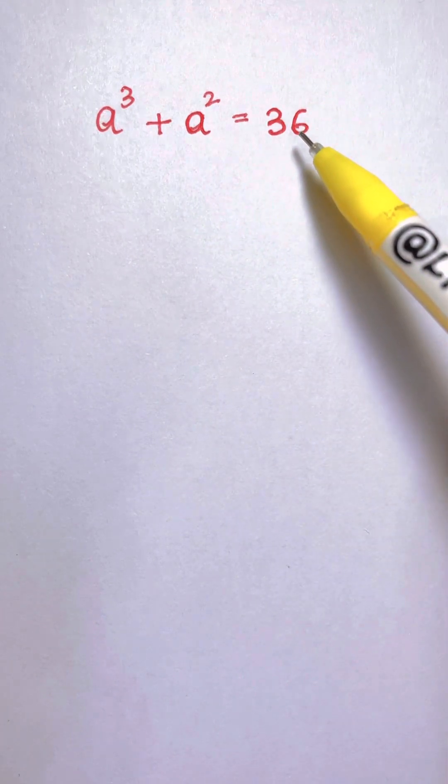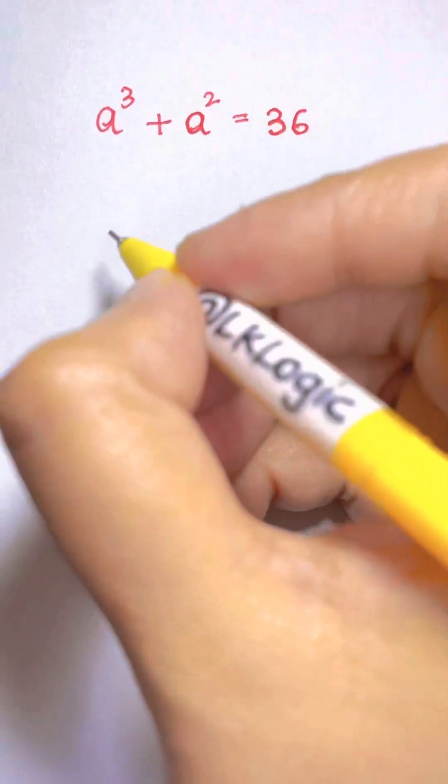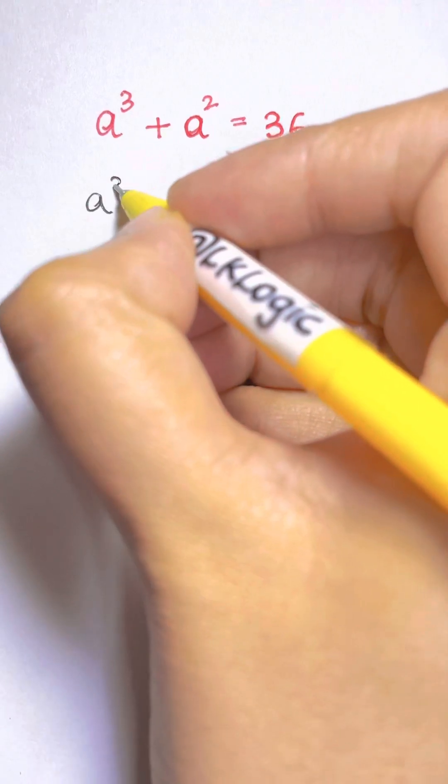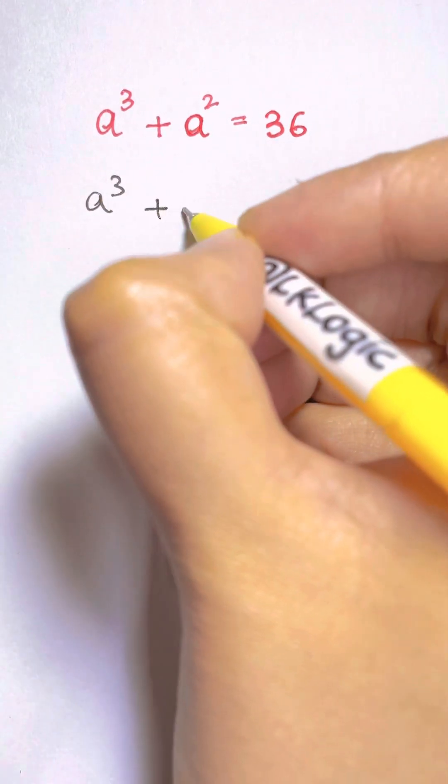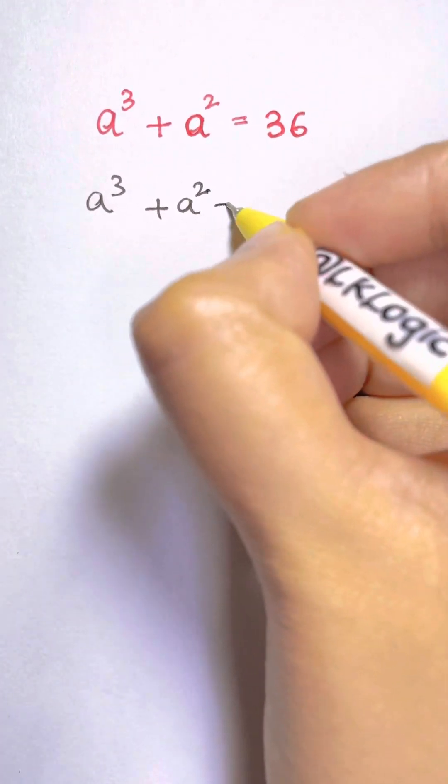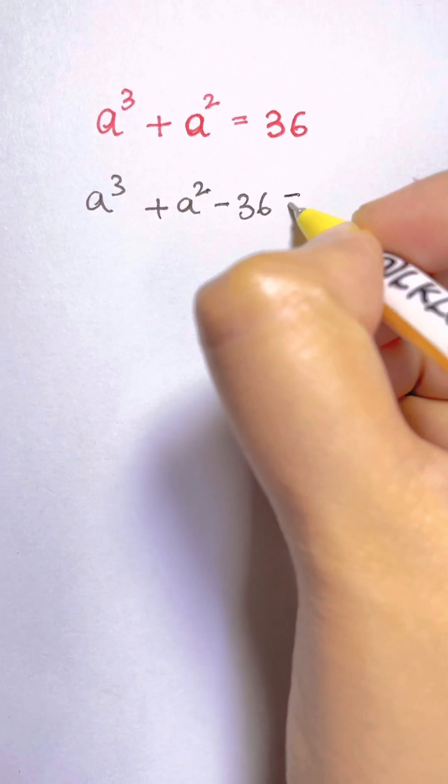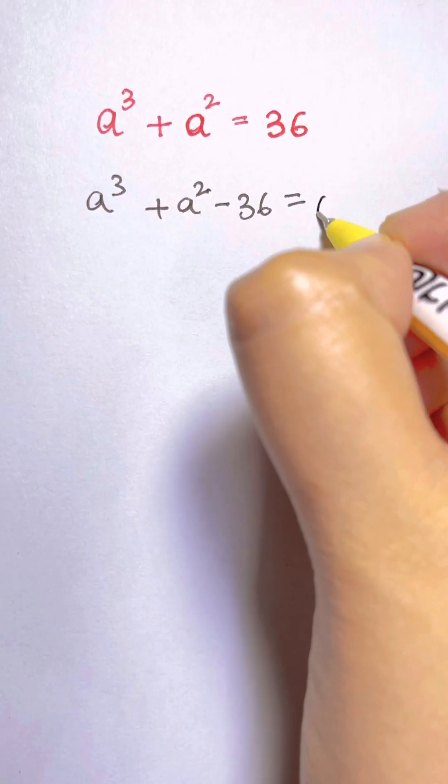First we are going to subtract this constant on both sides. So we are going to get a³ + a² - 36 equals 36 - 36, which is 0.